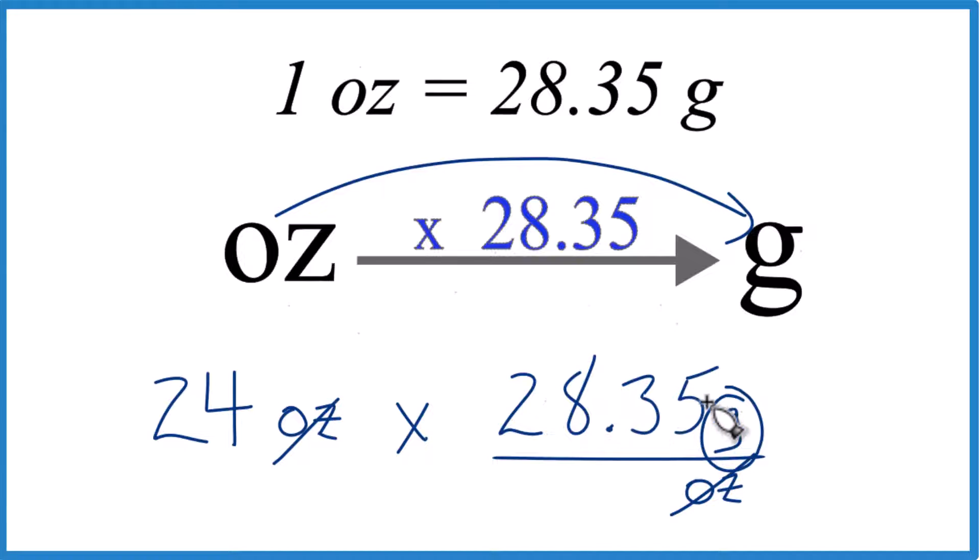Remember, it's 28.35 grams per ounce, 28.35 grams per ounce. That's where this number comes from.